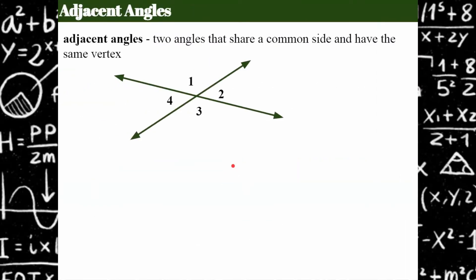Adjacent angles are two angles that share a common side and have the same vertex. So by definition, they share a common side and have the same vertex.